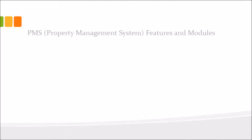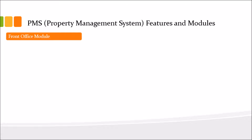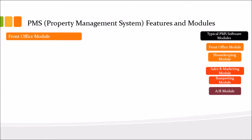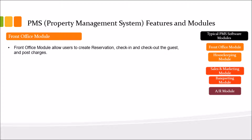Moving ahead — the front office module allows users to create reservations, check in and check out guests, and post charges. The front office module gathers charges from the telephone system, internet system, and point-of-sale system in the restaurants. All these charges come down to the front office module and go to the guest account — which in hospitality is called a folio. Front office staff can also post charges manually.